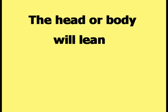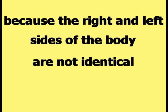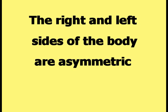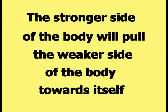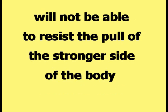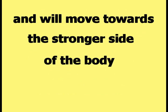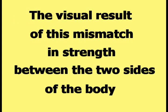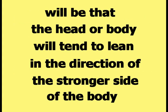The head or body will lean because the right and left sides of the body are not identical — they are asymmetric. The stronger side of the body will pull the weaker side towards itself. The weaker side will not be able to resist and will move toward the stronger side. The visual result of this mismatch in strength between the two sides is that the head or body will tend to lean in the direction of the stronger side.